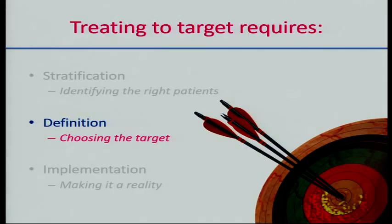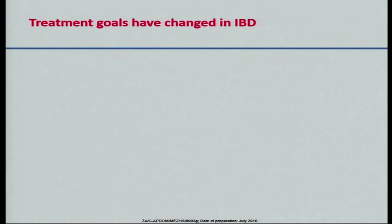Now that we've identified the groups of patients who have more aggressive disease, the next part of the process is to identify the target we need to aim for. This is a very controversial and difficult area, because the treatment goals in inflammatory bowel disease have changed over time.